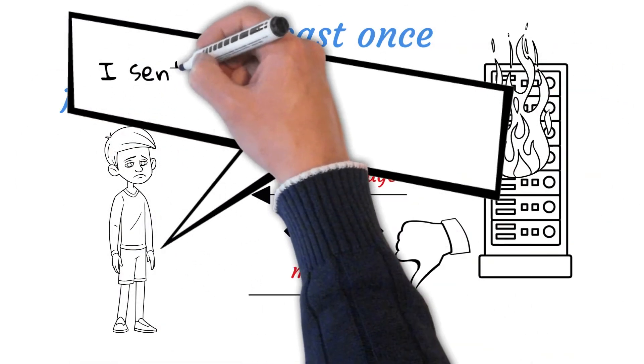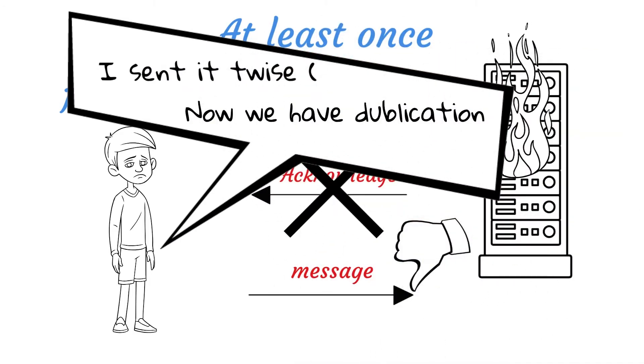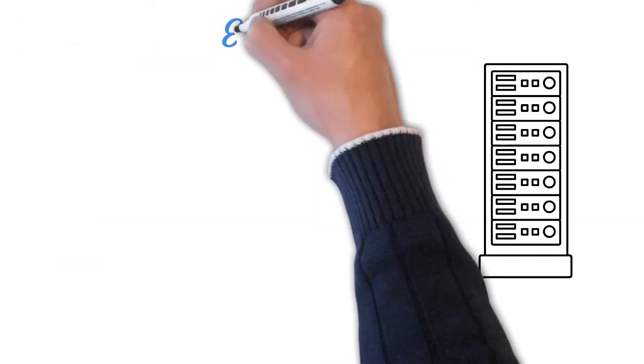This also results in higher cost and implementation overhead than the at most once delivery semantic configuration. According to documentation, Kafka guarantees at least once delivery by default.